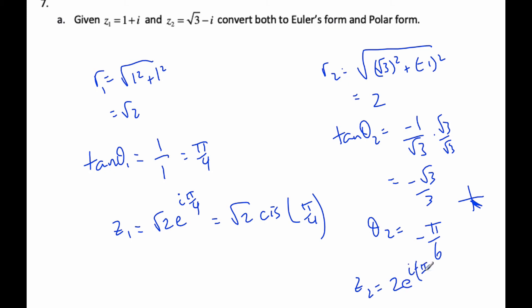So z2 is simply 2 e to the i negative pi by 6, or I can say 2 cis negative pi by 6.